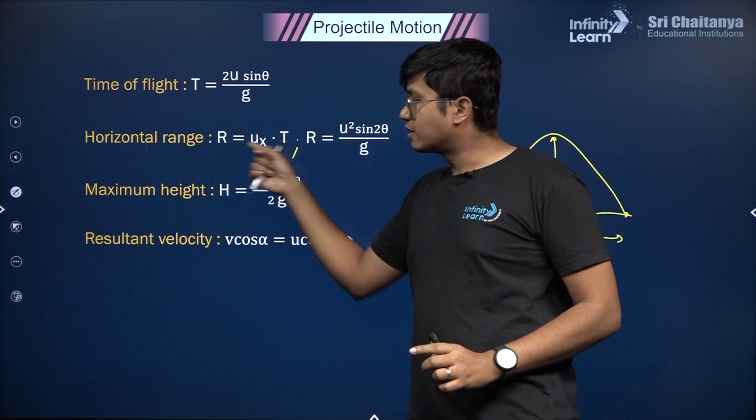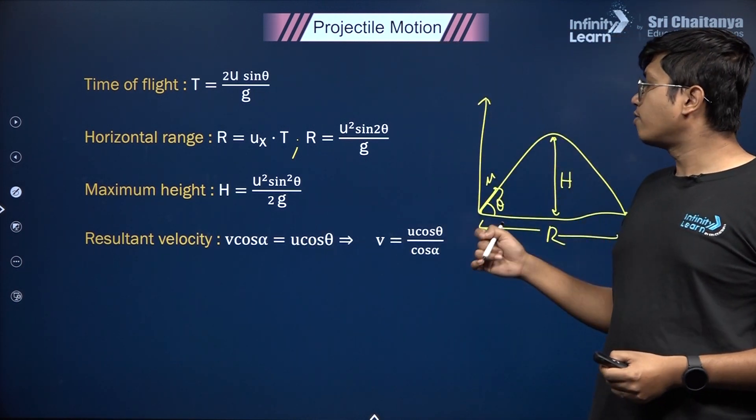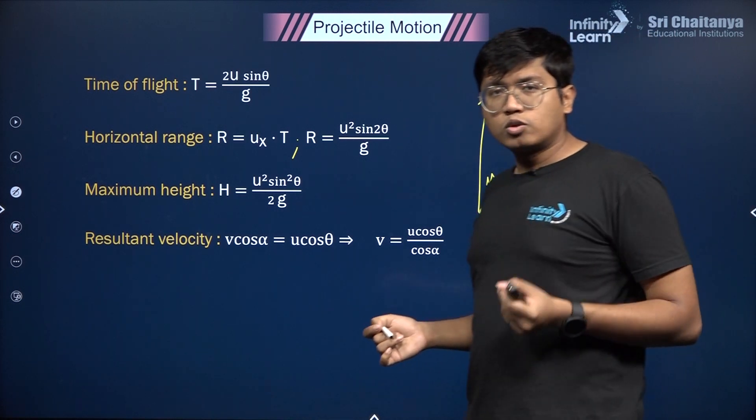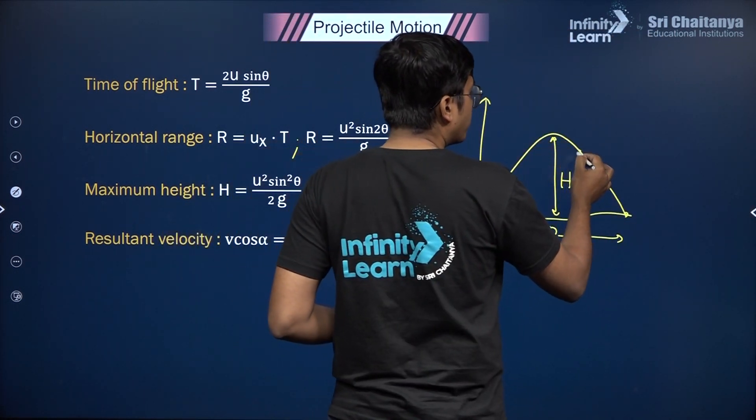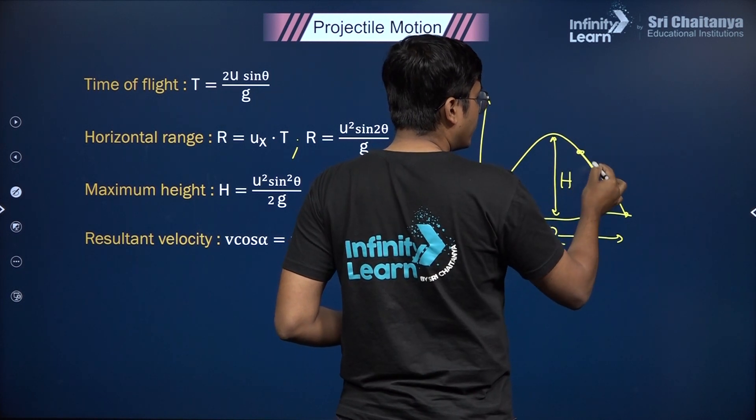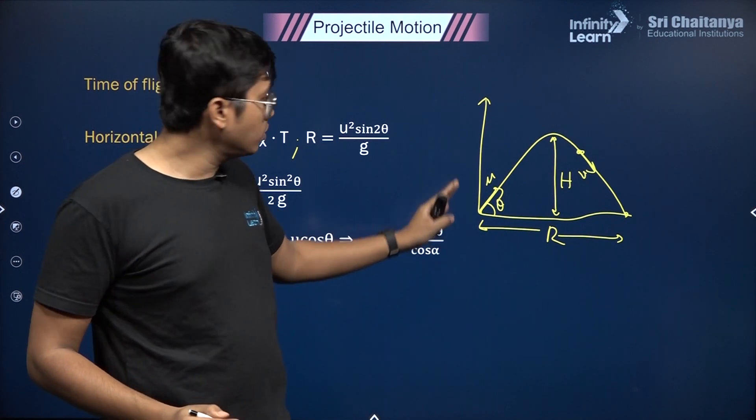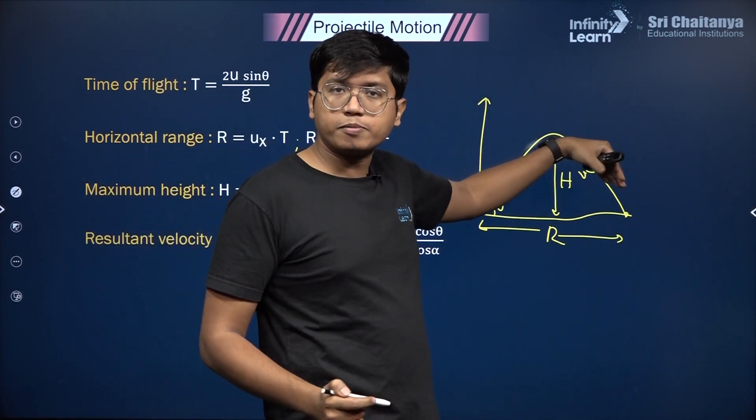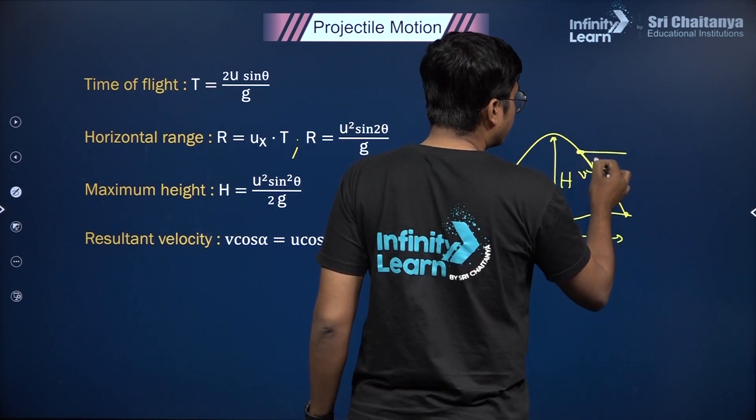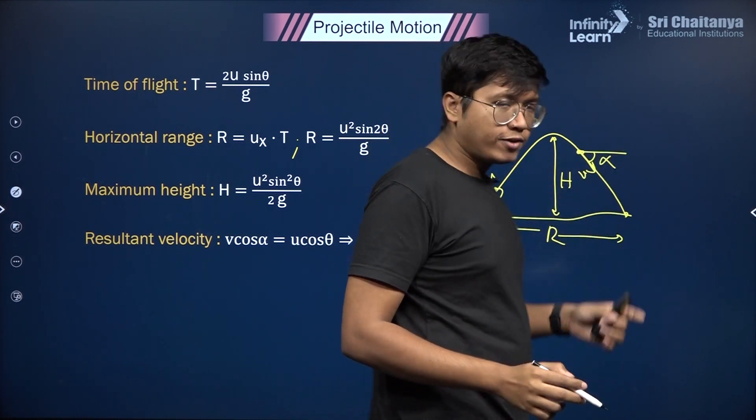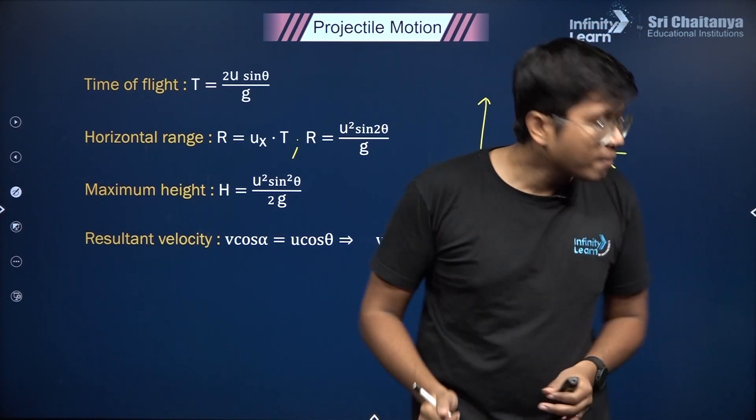Next is the resultant velocity, which is v cos α = u cos θ. What do v and cos α mean? Say they tell you at any point you have the speed v in a certain direction, and the angle it makes is α.